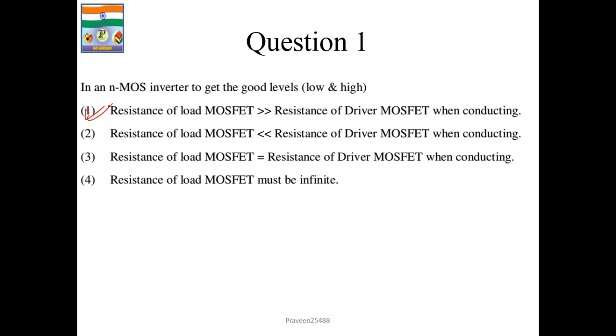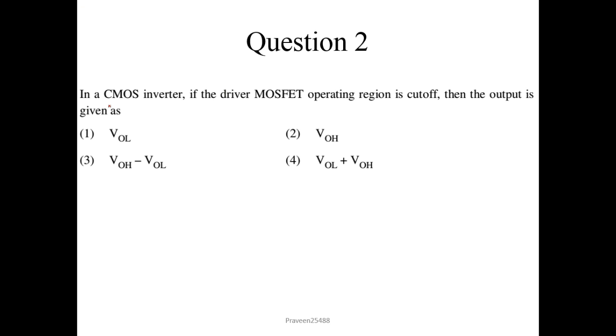Question number 2. In a CMOS inverter, if the driver MOSFET operating region is cut off, then the output is given as high. So option 2 is the correct answer — this output is high voltage.